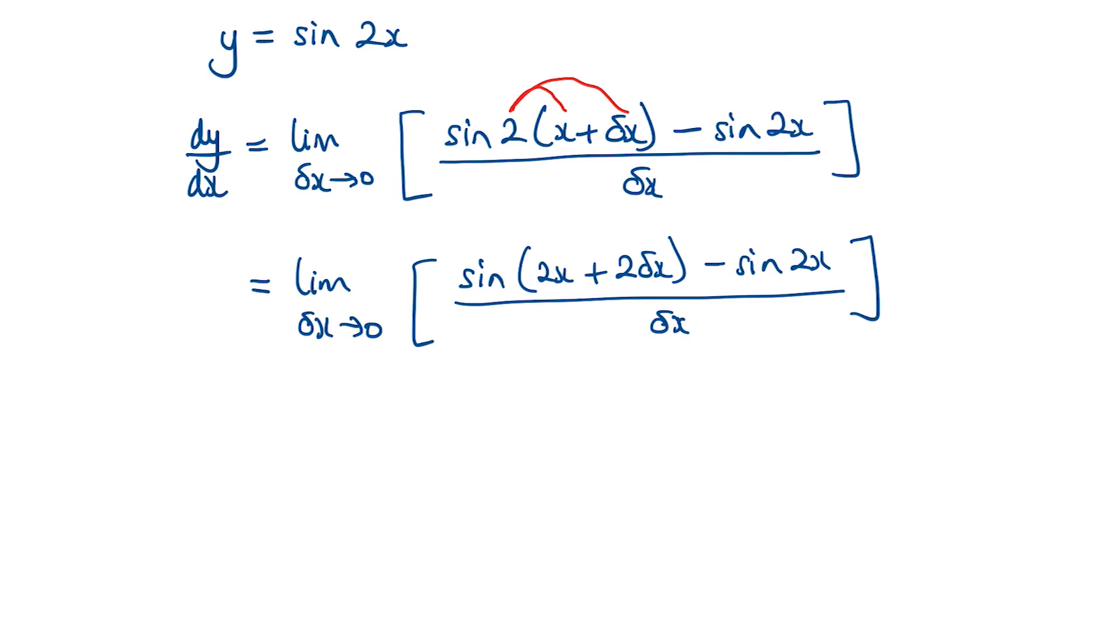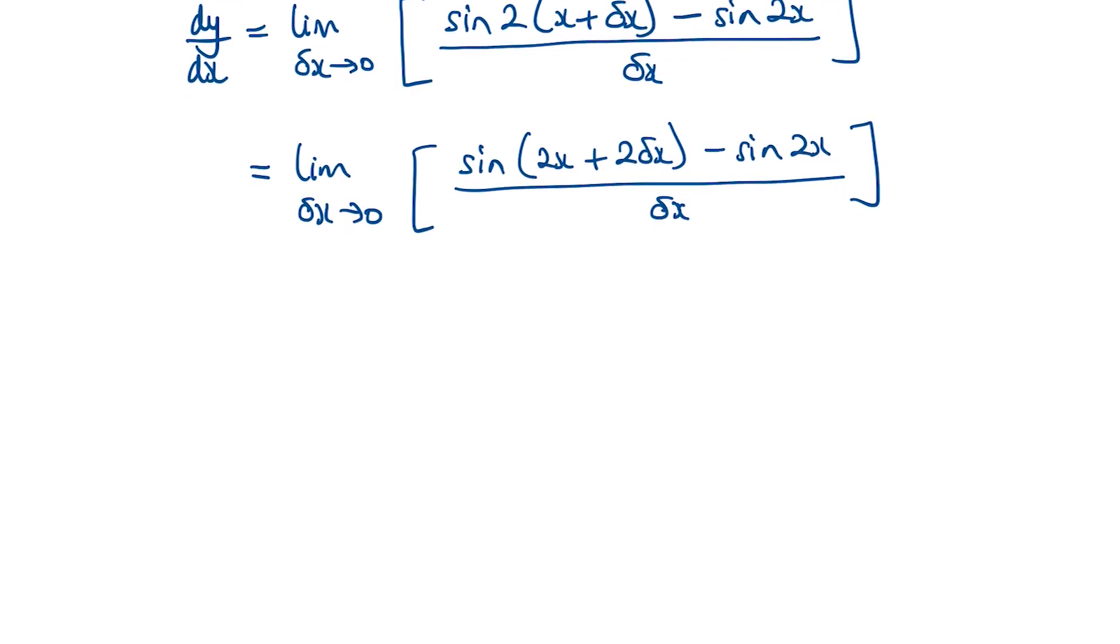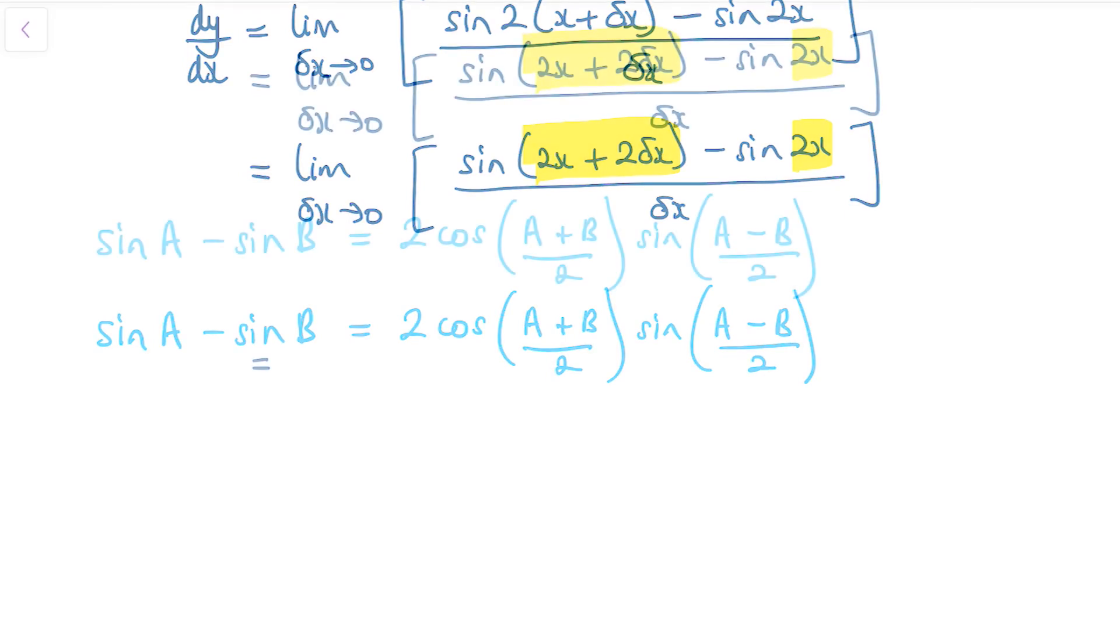Now, this is where the trick comes in. If you look at sine of 2x plus 2 delta x minus sine of 2x, you might notice this is one of the trig formulas. So if we have sine A minus sine B, that's what we've got here—a sine A, let's treat this as A, and sine B, let's treat this as B. We can write it as 2 cos of A plus B over 2 times sine of A minus B over 2. So using that, we can rearrange this equation.